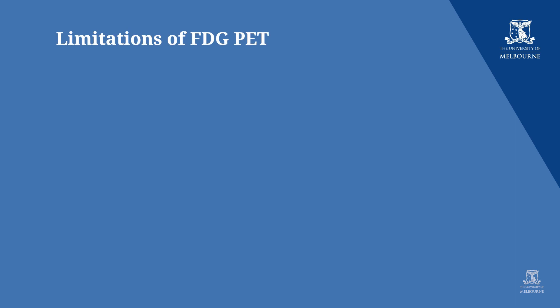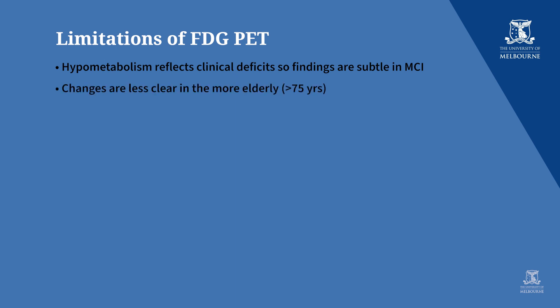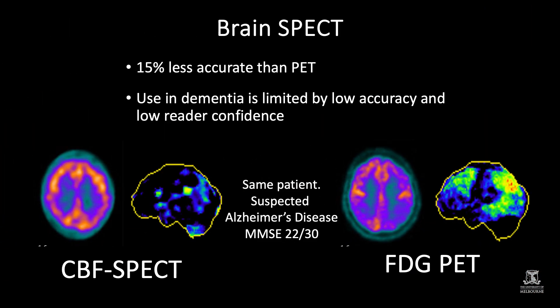There are limitations to FDG-PET. The degree of hypometabolism reflects the clinical deficits, so findings can be subtle in mild cognitive impairment. Changes are less clear in more elderly patients over the age of 75, and the sensitivity and specificity for Alzheimer's disease is around the 80 to 90 percent level. SPECT is also available on Medicare but it's 15 percent less accurate than PET. Comparing the same patient with SPECT and FDG-PET, the FDG-PET changes are far clearer, giving much greater confidence in interpretation.